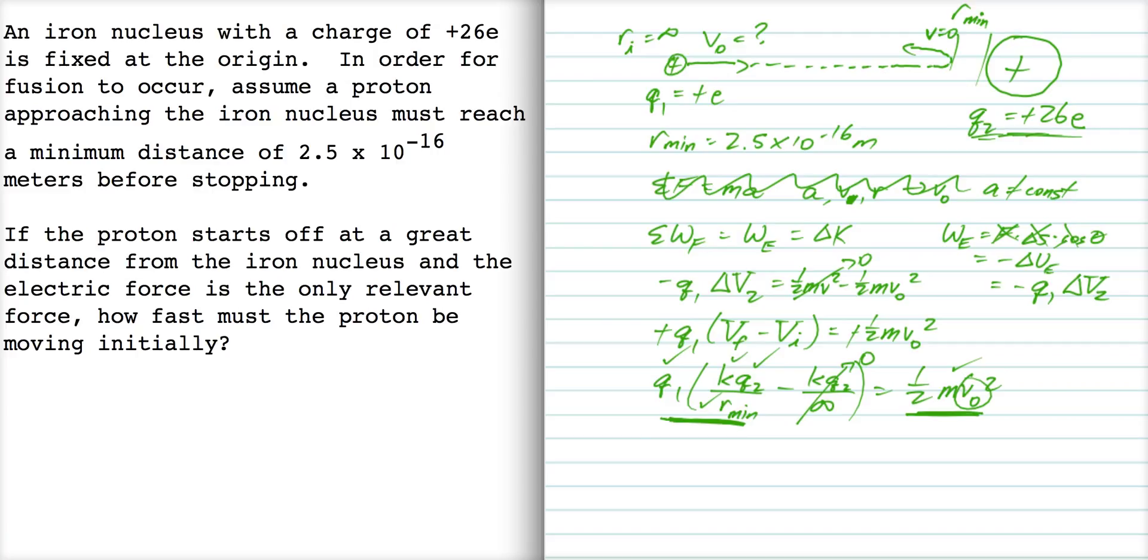If I write down the equation, I get 1.6 times 10 to the minus 19, that's q1, multiplied by k, multiplied by q2, which is 26 times 1.6 times 10 to the minus 19. So this term appears twice. If I were writing this in shorthand, I would say that kq1q2 over r is ke squared times 26 over r.